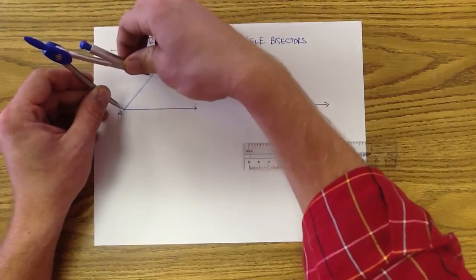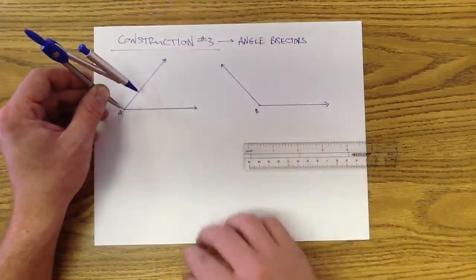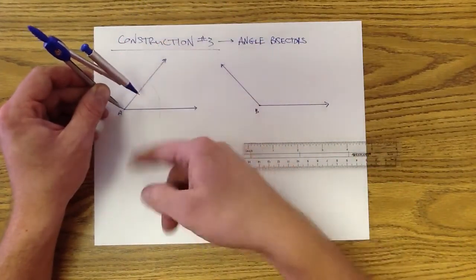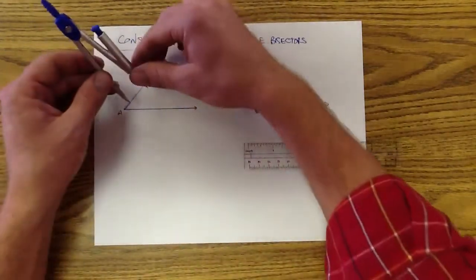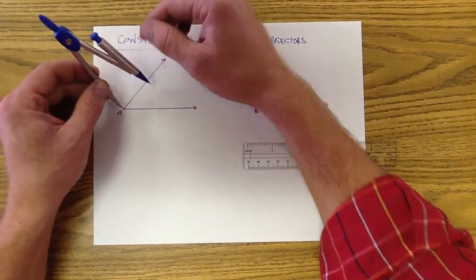It could be this size, I could make it smaller, I could make it bigger. Generally speaking, I'm going to keep it somewhat closer to A because it's going to be easier to work with, but it really doesn't matter.